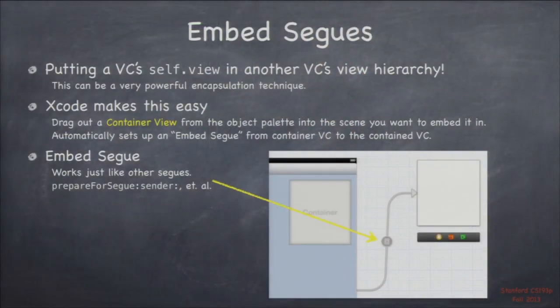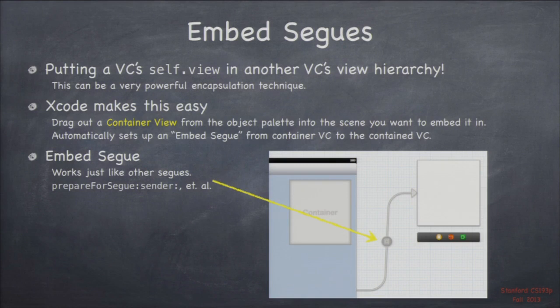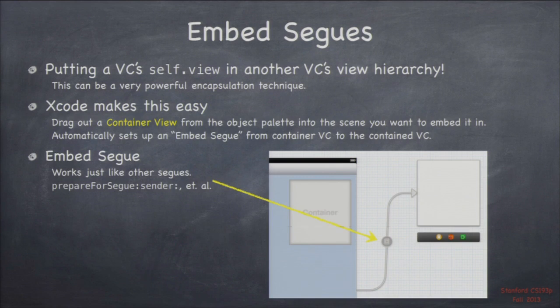Xcode makes it really easy to do embed segues. You go to the object palette and find something called container view. Drag that out into the view you want, and it automatically creates a little view controller with a segue to it. You can control-drag from this container to any VC you want embedded there. Once you do that, it's just like any other segue — it has to be prepared. And that container is just like any other UIView: you can set its hidden, change its frame, animate it, take it out of the view hierarchy and put it back. Its contents are drawn as the self.view of some other view controller.